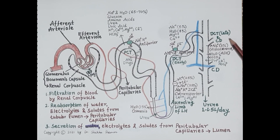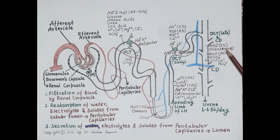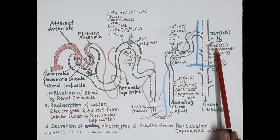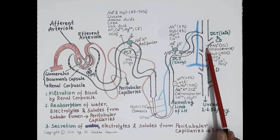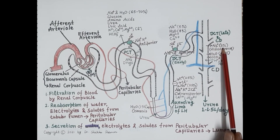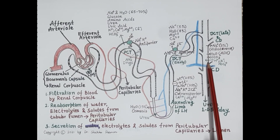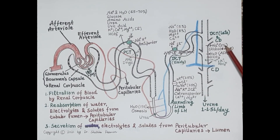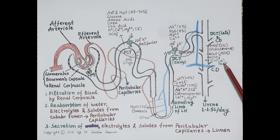In the late distal convoluted tubule and collecting duct, aldosterone regulates reabsorption of sodium by directing the synthesis of sodium channels and the sodium-potassium ATPase pump. Sodium is reabsorbed from the filtrate into the luminal epithelial cells through sodium channels and then pumped into the peritubular capillaries, while potassium ions are secreted into the lumen. This exchange of sodium and potassium is mediated by the sodium-potassium ATPase pump.